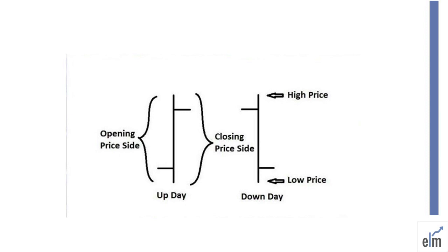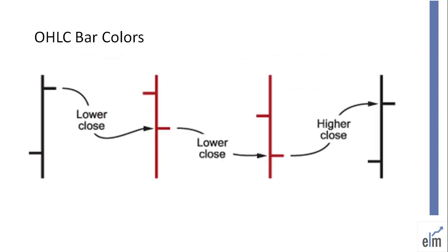The ticks present on the left side of any bar chart represent the open price, and the ticks present on the right side of any bar represent the close price for that particular trading period.